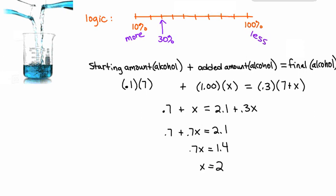What does x represent? The number of liters of pure alcohol to add to the original mixture. Does that seem reasonable? If we go back to our logic at the beginning, we said we would have more of the 10% solution and less of the 100% solution. So if we have 7 liters over here and 2 liters over here, that does make sense.